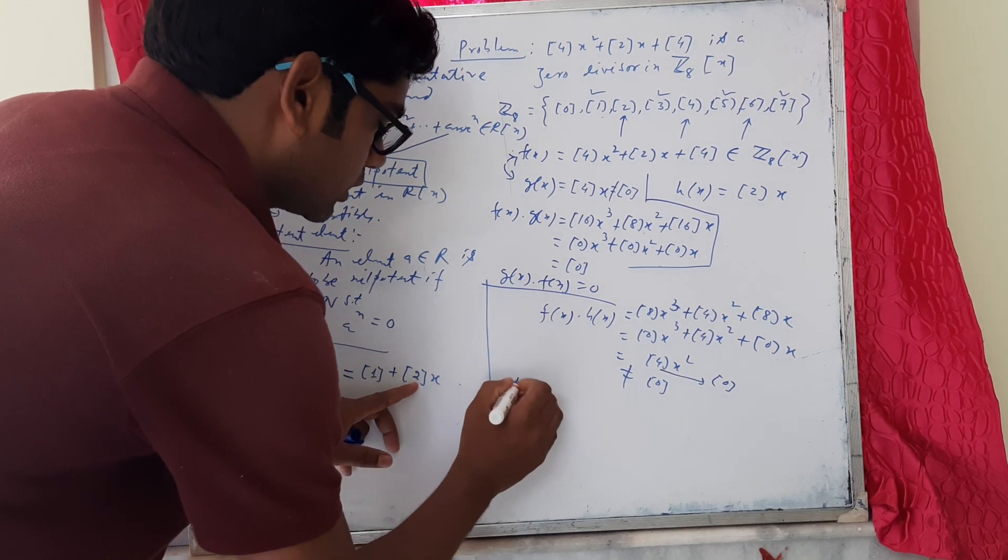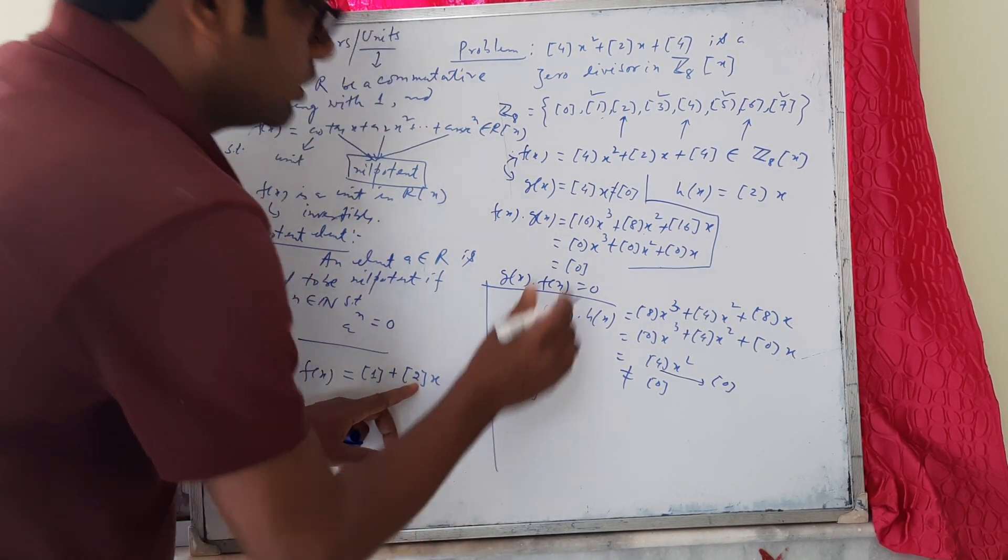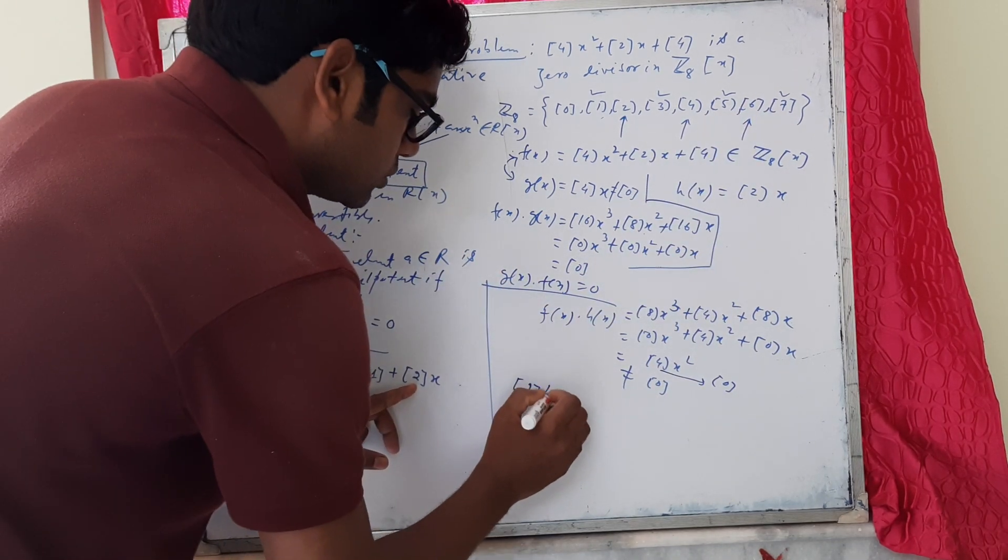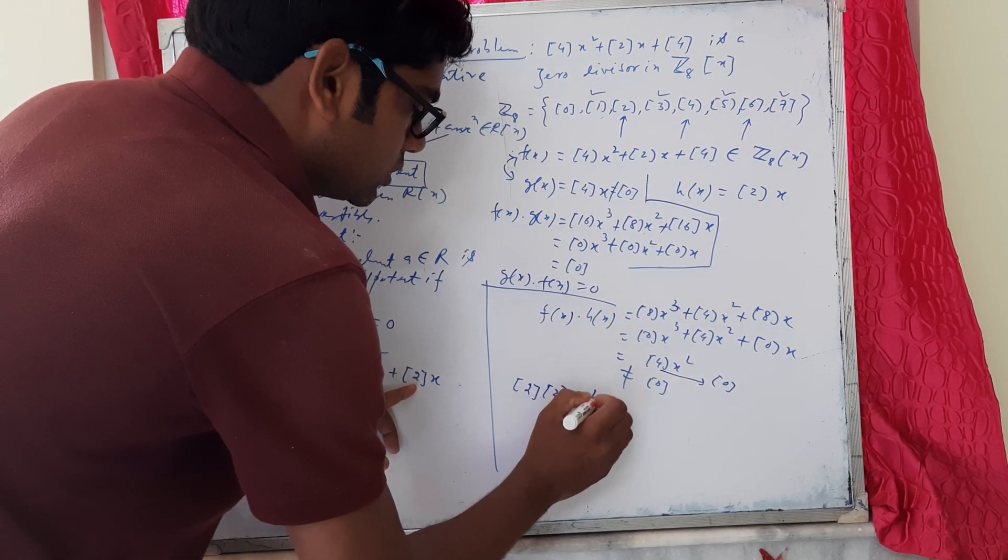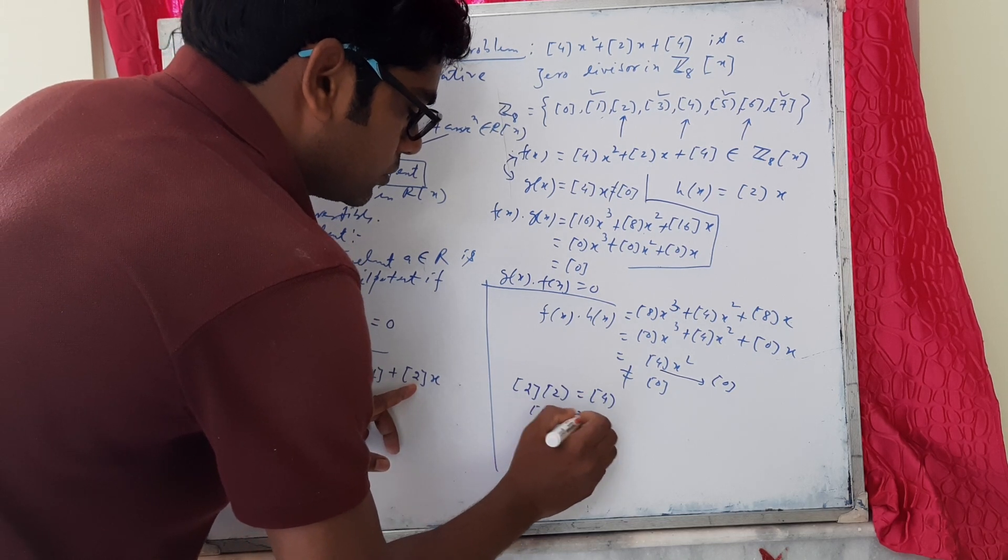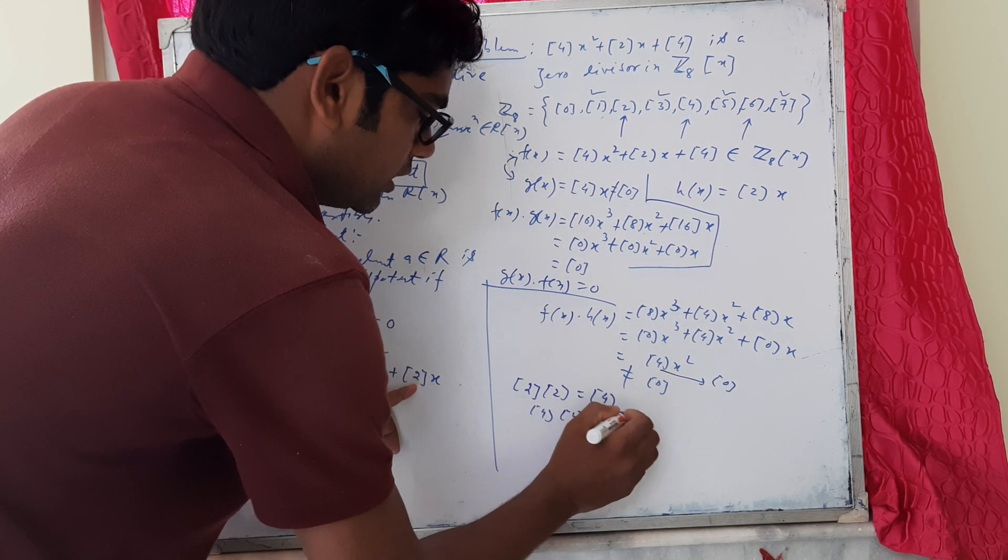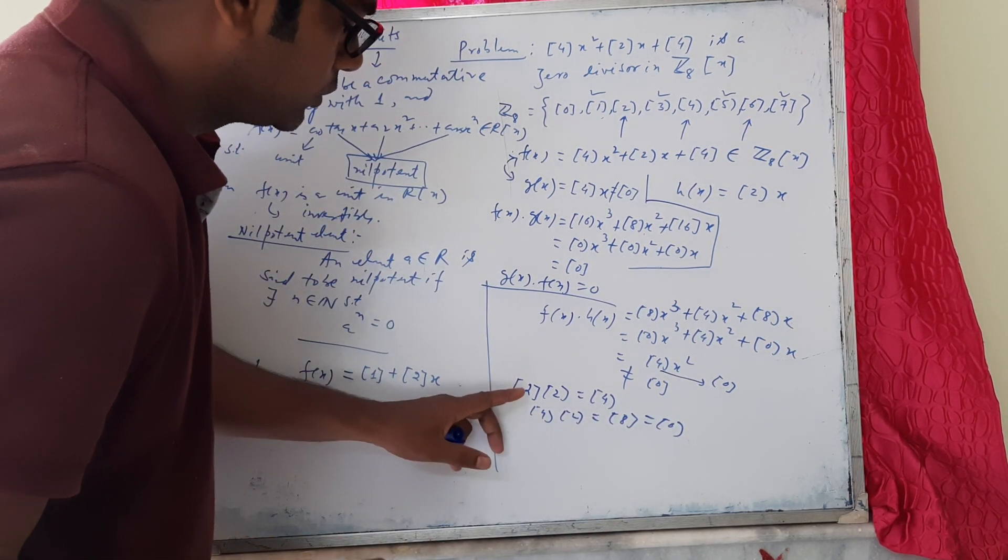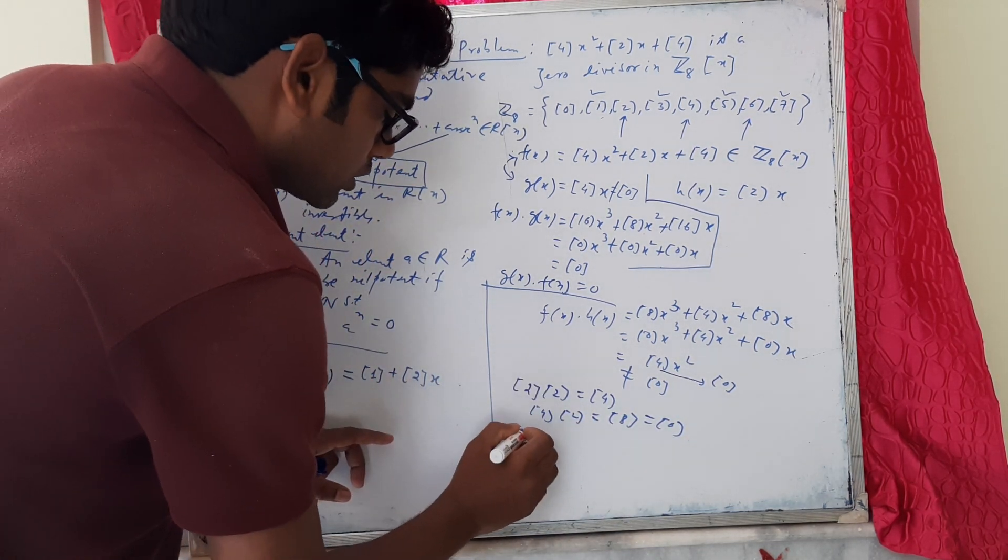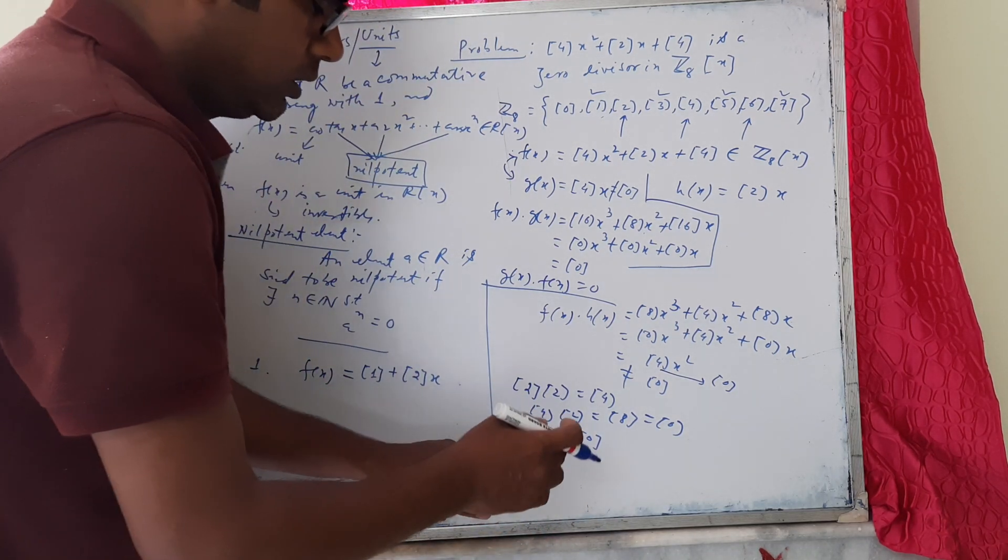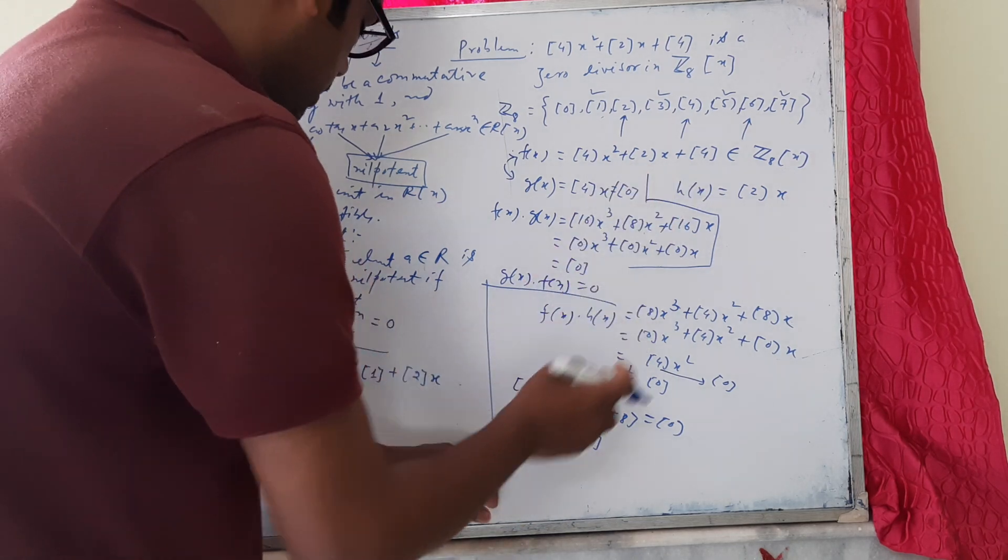Now check whether class 2 is a nilpotent element in Z₈ or not. Class 2 times class 2 is class 4. Class 4 times class 2 is class 8, which is class 0. How many times we have multiplied? Three times. So (class 2)³ = class 0. Therefore, class 2 is a nilpotent element in Z₈.